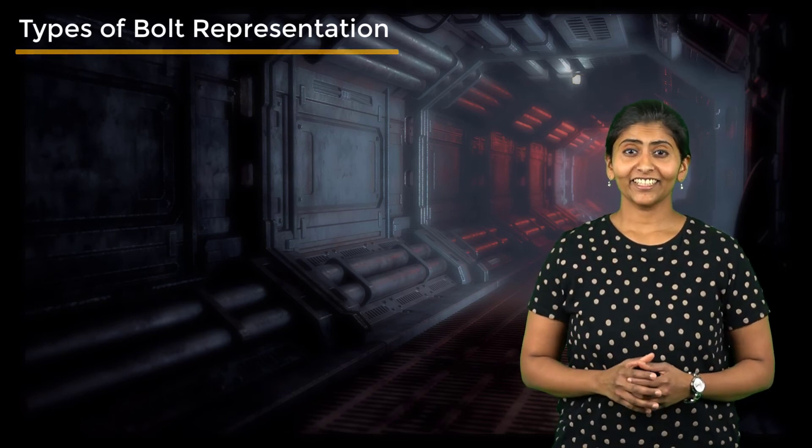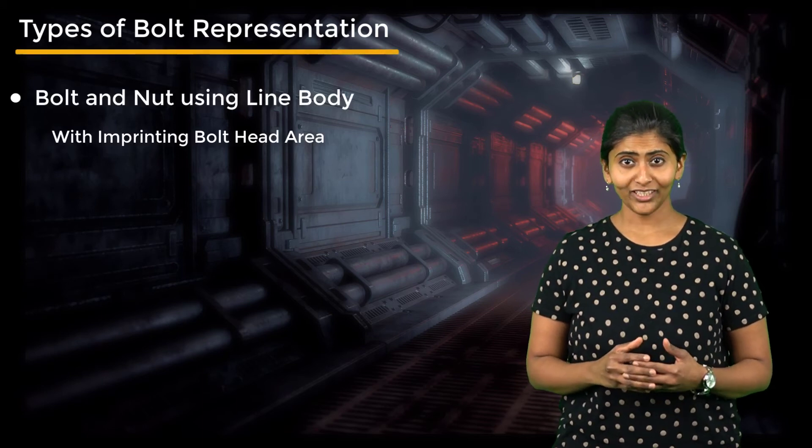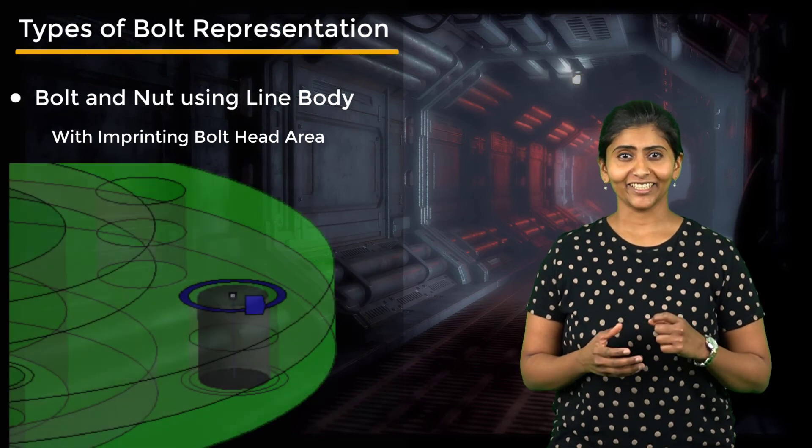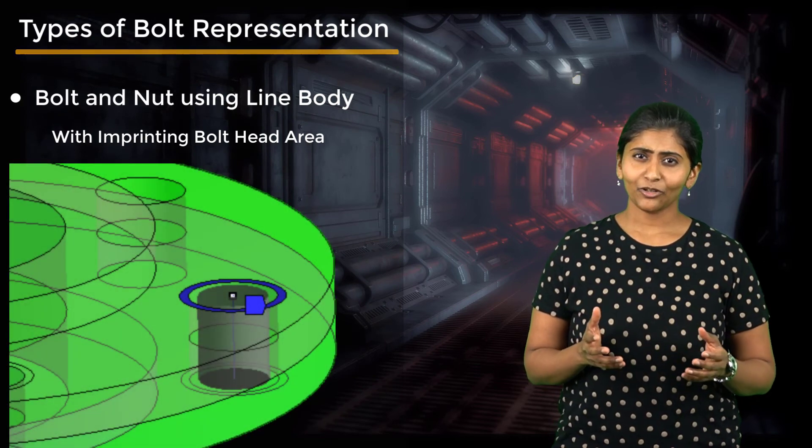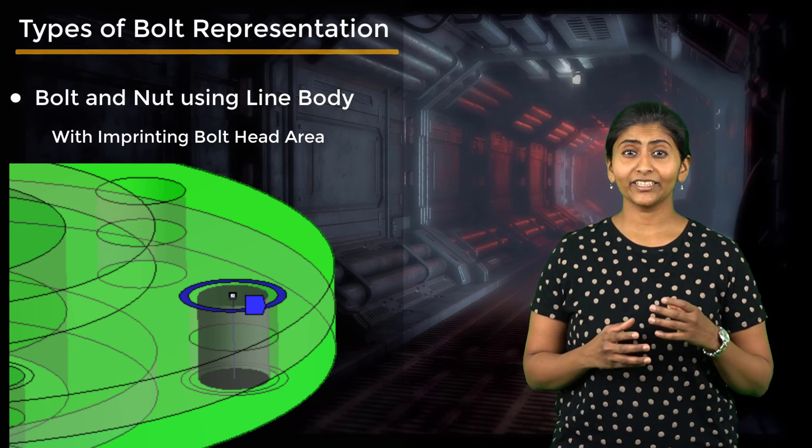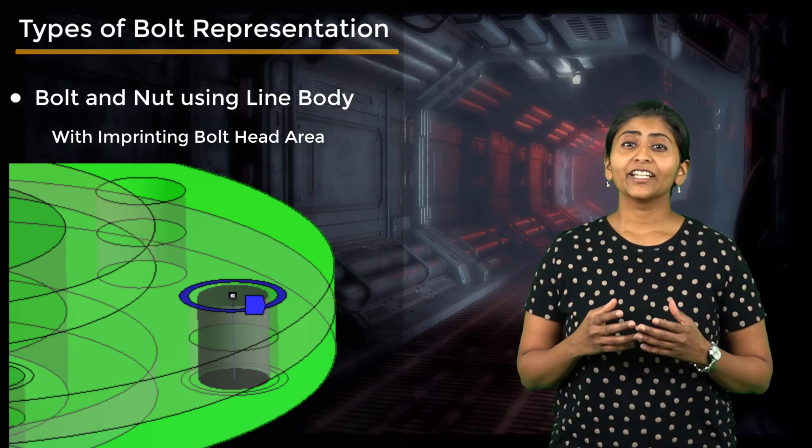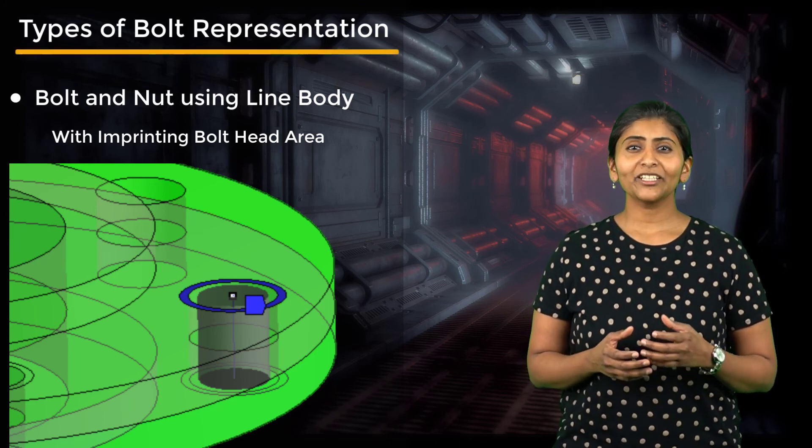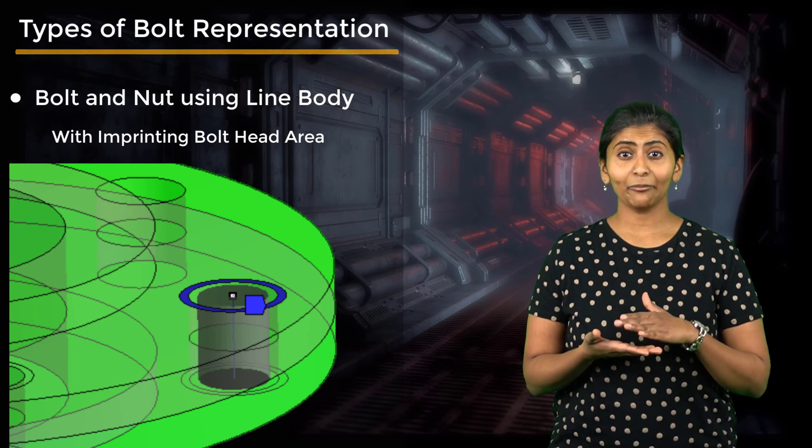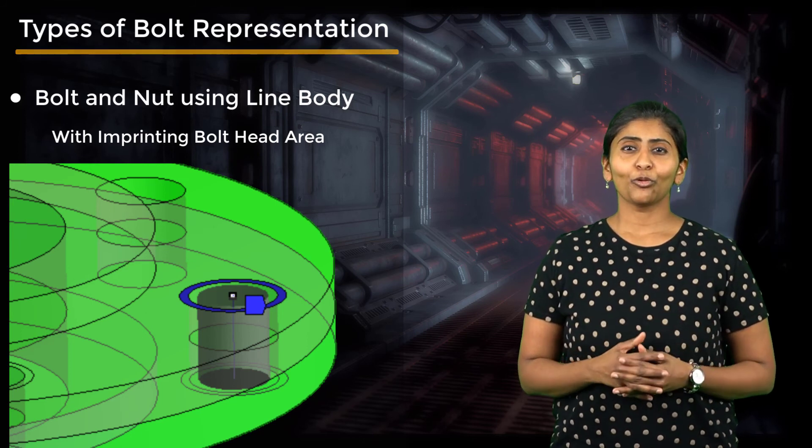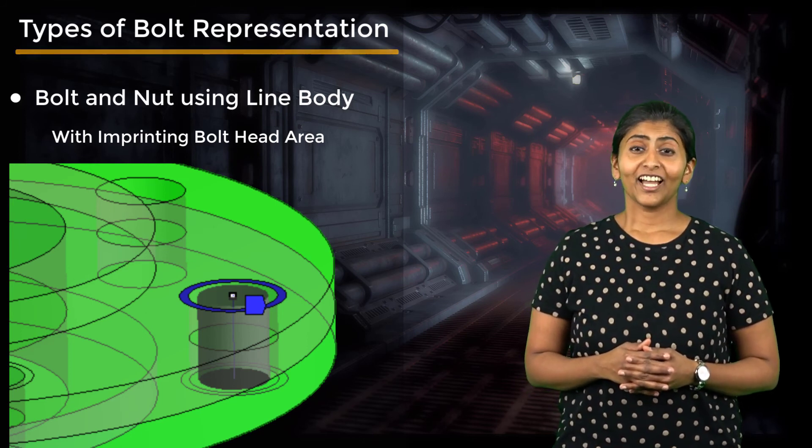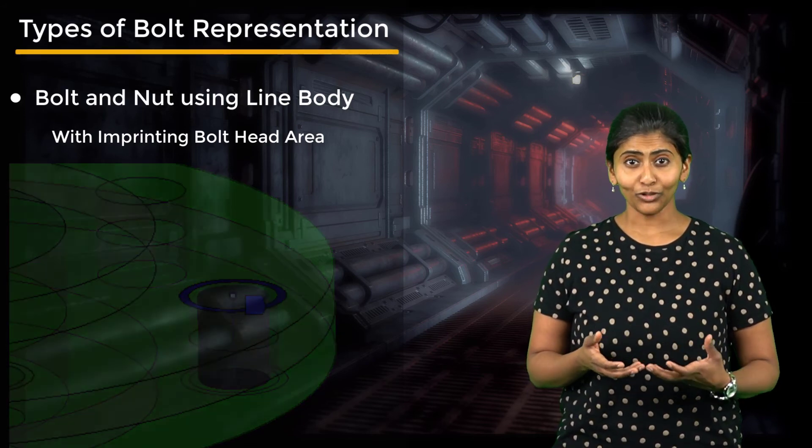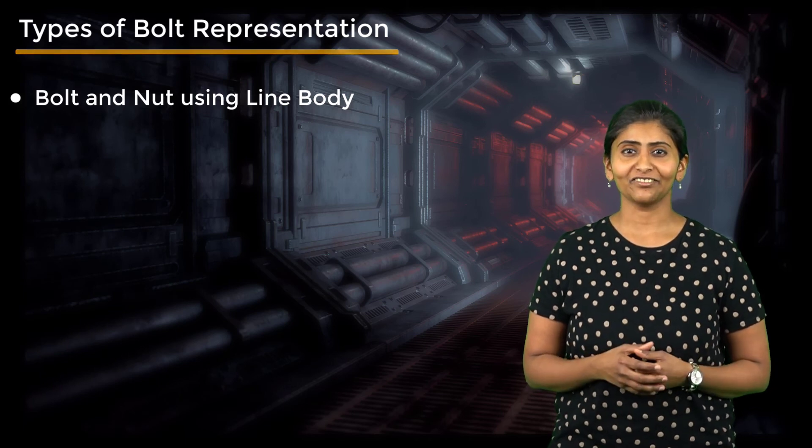A third technique is representing the bolt as a line body and imprinting the bolt head area on the clamp plates. A bonded or MPC contact is used between the line's end point and the bolt head imprint. This technique can approximately model the compression area on the clamp plates due to the bolt load. As discussed earlier, using a line body to represent the bolt makes this method computationally efficient.